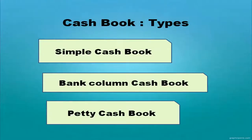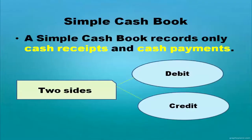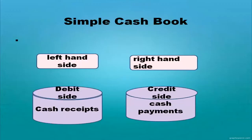There are mainly three types of cash book: simple cash book, bank column cash book, and petty cash book. Simple cash book records only cash receipts and cash payments. It has two sides — the debit side and the credit side. The left-hand side is the debit side, where cash receipts are recorded. The right-hand side is the credit side, where cash payments are recorded.